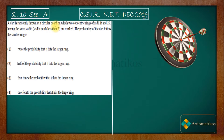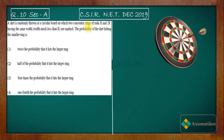A dart is randomly thrown at a circular board on which two concentric rings of radii R and 2R are drawn, having the same width. So we have a dart thrown at a circular board. The question states it has two concentric rings — the bigger ring is of radius 2R and the smaller ring is of radius R.